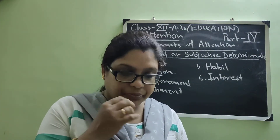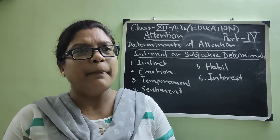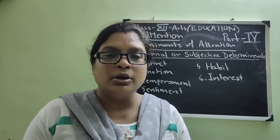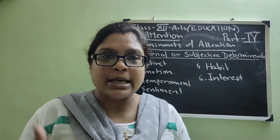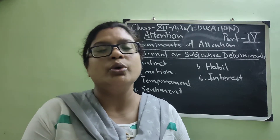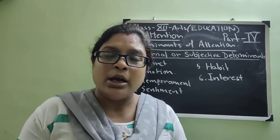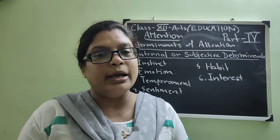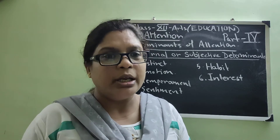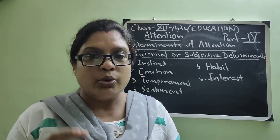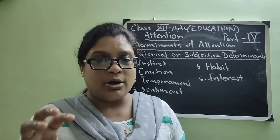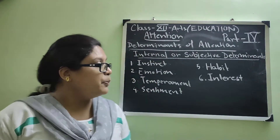Next is emotion. Suppose in a particular situation a person is handling something, but standing beside him you are thinking it could be handled in a better way. Emotion always controls the attention of a person — the way he or she is behaving makes you emotionally attached to the situation, and your mind catches your attention toward a different way of behaving. The third point is temperament.